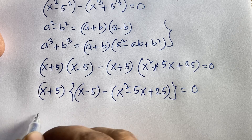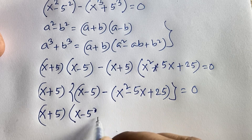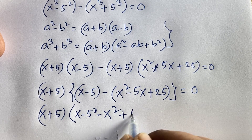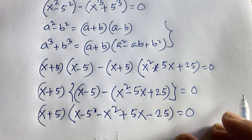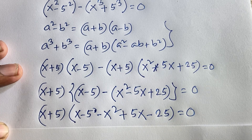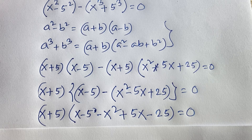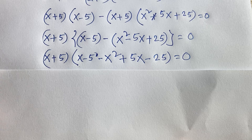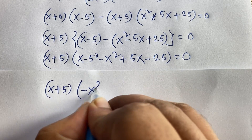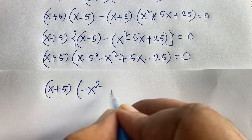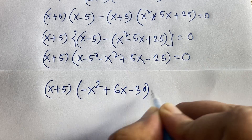Now (x plus 5) is a common factor. Factoring it out: (x plus 5) times [(x minus 5) minus (x squared minus 5x plus 25)] equals 0. Expanding the bracket: x minus 5 minus x squared plus 5x minus 25, which gives (x plus 5)(minus x squared plus 6x minus 30) equals 0.